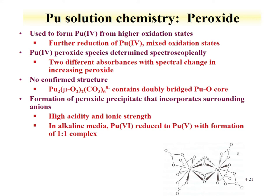The peroxides, as mentioned earlier for uranium and plutonium chemistry, form interesting compounds. The peroxide can also be used to change redox state — for instance, oxidizing from the 4 to the 6. There is no confirmed structure of the plutonium bridge species shown here; this is the proposed structure. However, it is known that you can form peroxide precipitates that will incorporate surrounding anions, similar to uranium — making peroxide a route for precipitating plutonium from solution for separations.